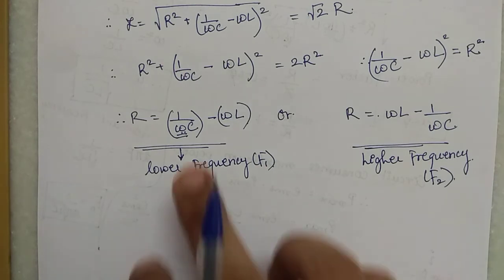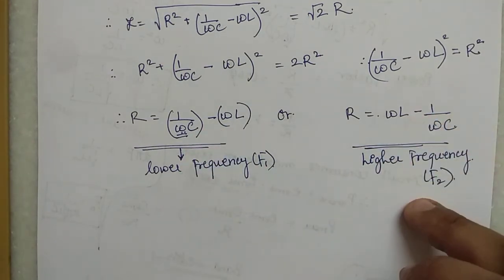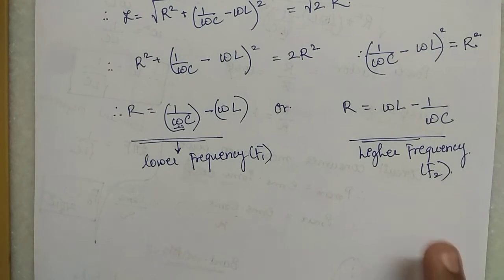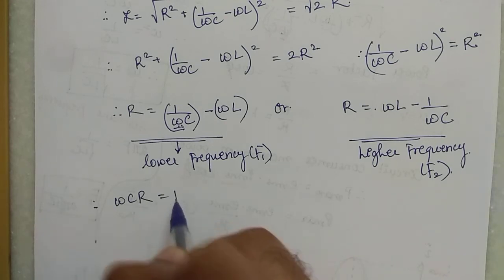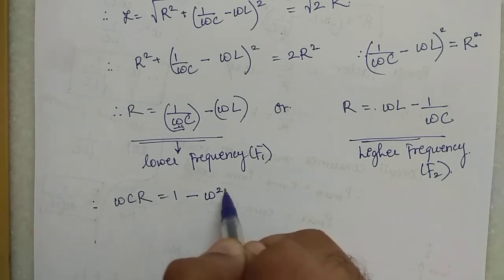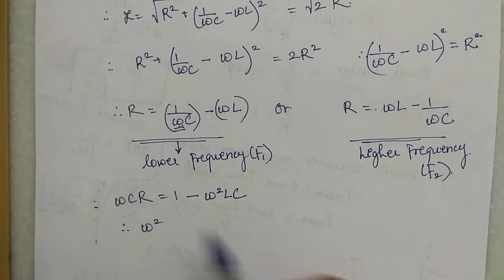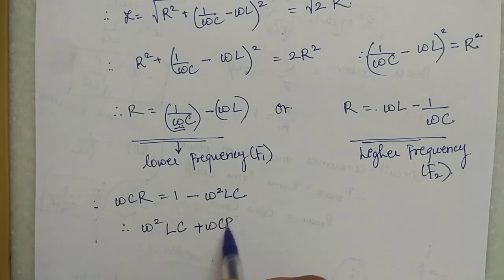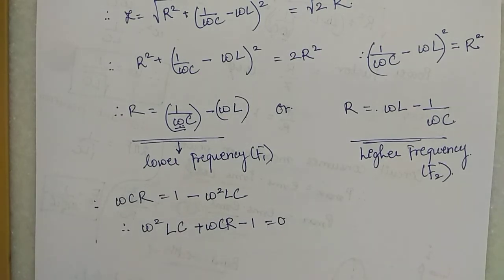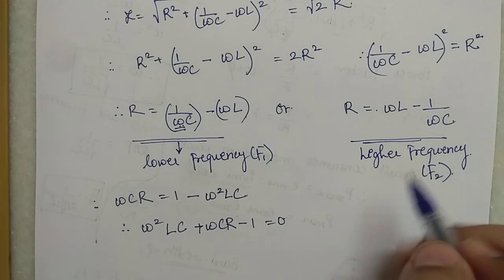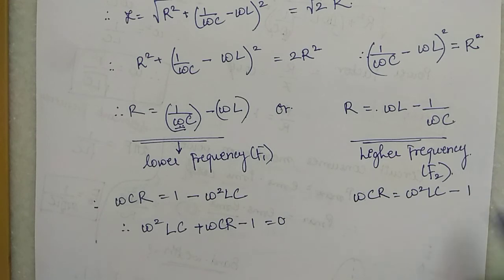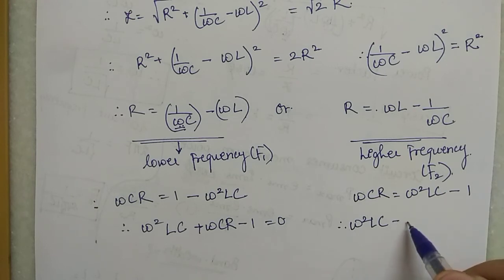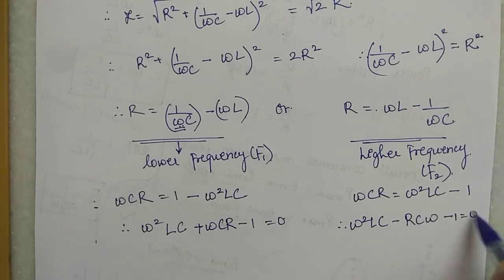To find ω₁, multiplying through by ωC gives: ω²LC + ωCR − 1 = 0. To find ω₂, from ωL − 1/(ωC) = R, multiplying by ωC gives: ω²LC − RCω − 1 = 0.